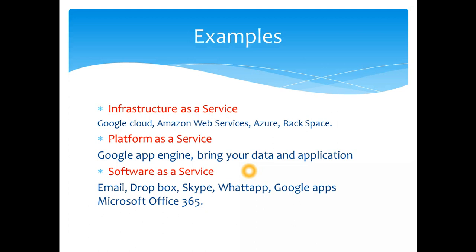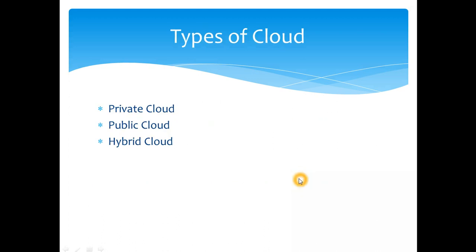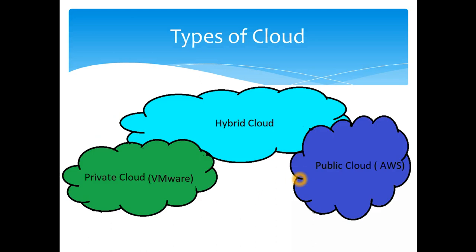Another type of cloud I wanted to deep-dive into is the types of cloud: private, public, and hybrid. Here's another diagram — it looks a little childish but it does convey the message, and it's an original image I created. You have your own private cloud, which is your private infrastructure, and you have AWS as a public infrastructure example.